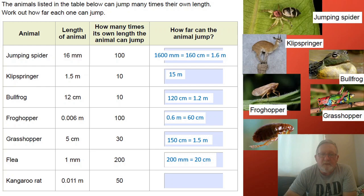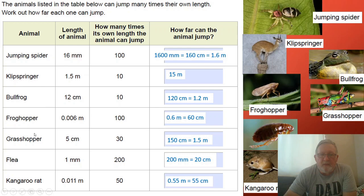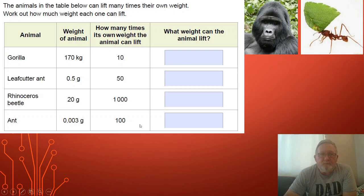Grasshoppers, well we know those. Five times 30 is 150, 150 centimeters, 1.5 meters. A flea, 200 times one is 200 millimeters or 20 centimeters. And a kangaroo rat, 50 times 11 thousandths, five elevens are 55, so 50 elevens would be 550 which moves it up two place values. 0.55 of a meter is 55 centimeters or just over half a meter.